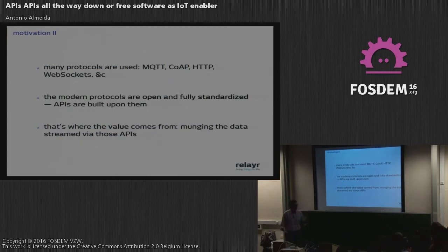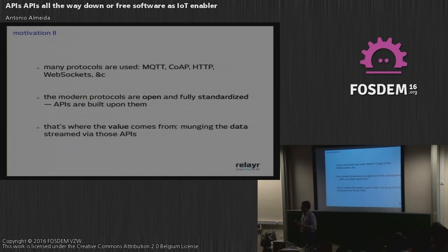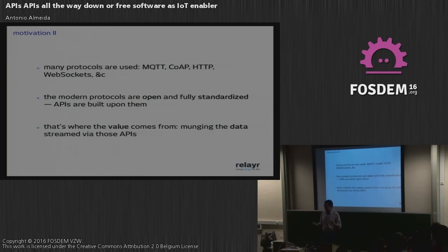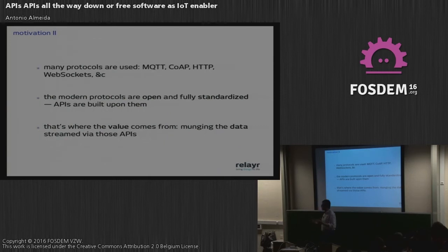We use a lot of protocols: MQTT, CoAP, HTTP, web sockets, etc. In the first talk this morning, Peter said that MQTT is really not open because you cannot extend the protocol. It's true — it was initially invented by IBM. They open-sourced it and it became an official standard, but it's a very limited protocol. You only have PubSub — you cannot have a request-response. So you have to hack around it: since you can't extend the protocol, you modify the payload to send commands, but then you don't have a response.